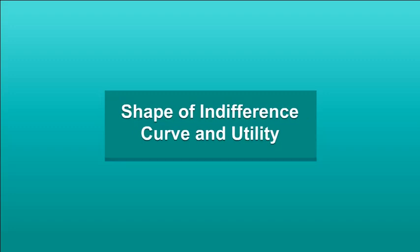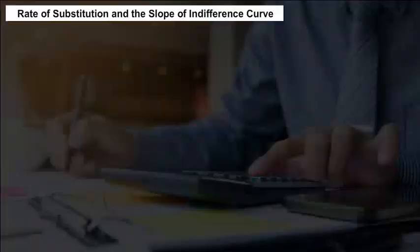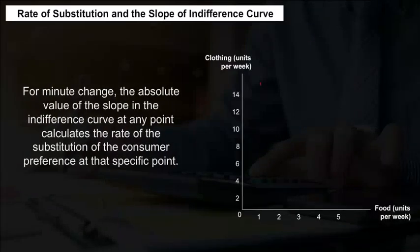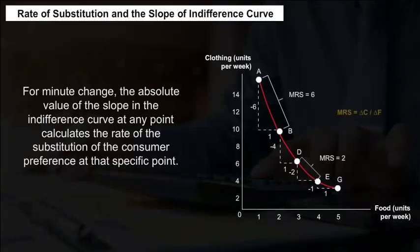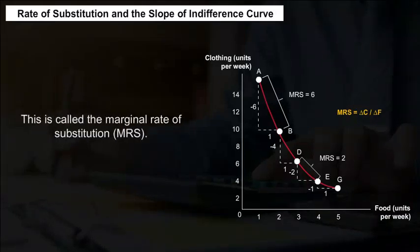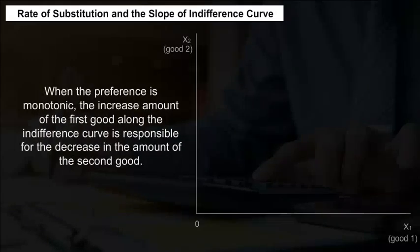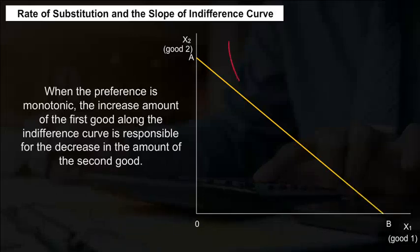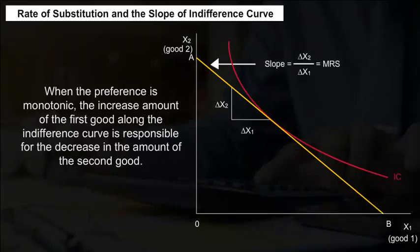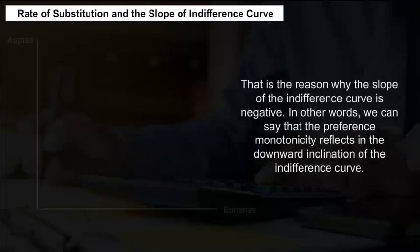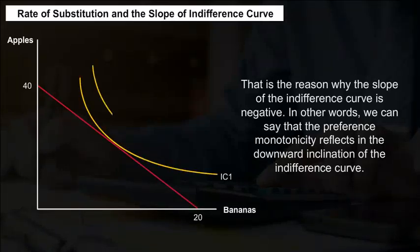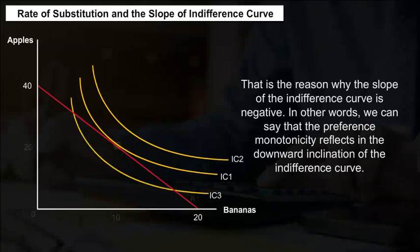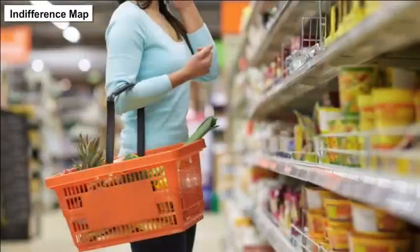Shape of the indifference curve, utility, rate of substitution, and slope: For minute changes, the absolute value of the slope of the indifference curve at any point calculates the rate of substitution of consumer preference at that specific point — this is called the marginal rate of substitution (MRS). When the preference is monotonic, an increased amount of the first good along the indifference curve causes a decrease in the second good, which is why the slope of the indifference curve is negative, reflecting its downward inclination.